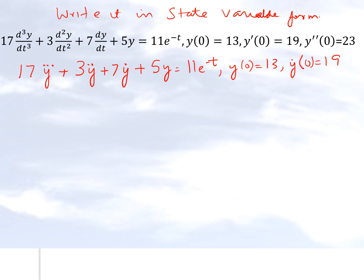We are following the convention generally used in most books so that when you go to other courses such as vibrations or controls, you'll be familiar with this notation. Since we have second and third derivative terms — not first derivative terms — we need to do a transformation. We will call y to be x1, renaming the dependent variable y as x1.